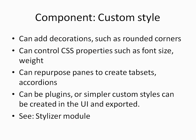Panels also has styles which you can apply to panes and regions. Sometimes you can laughingly recognize a site was done with panels because of that cheesy rounded-corners style it comes with. It can be made to look good, and it does a lot more than that — you can apply specific CSS just by changing the style, and you can do crazy things like turning panes into tab sets and accordions.